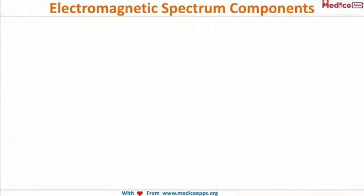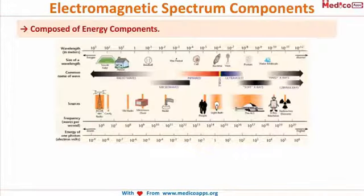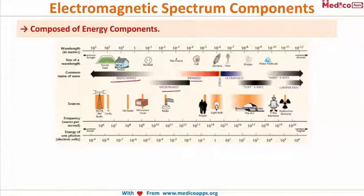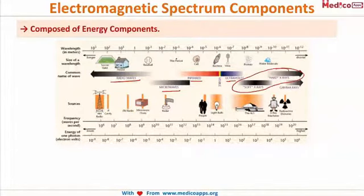The electromagnetic spectrum is composed of energy components. In this picture you can see radio waves, microwaves, infrared, ultraviolet, X-rays — which can be hard X-rays or soft X-rays — and gamma rays.